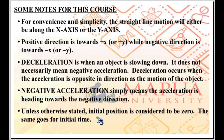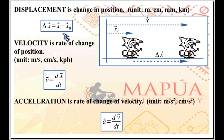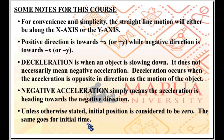Unless otherwise stated, initial position is considered to be zero, and the same goes for initial time. Therefore, delta x will simply be referred to as x in many situations, because we consider x-initial to be zero. If the problem gives a value for initial position x₀, then delta x equals x minus x₀. But under normal circumstances, we set x₀ to zero, so delta x equals x. When we say displacement in our discussion, we use x because x-initial is set to zero.